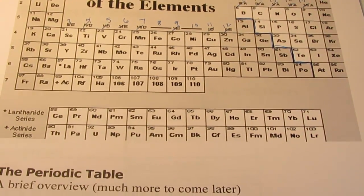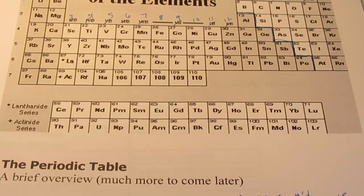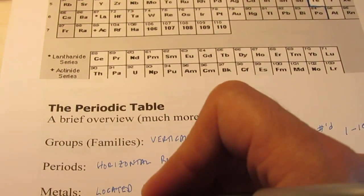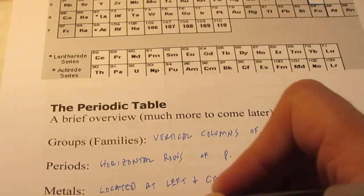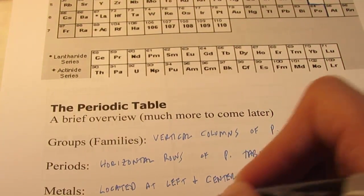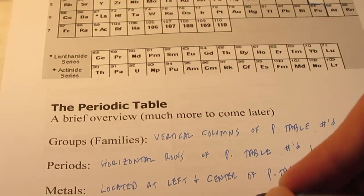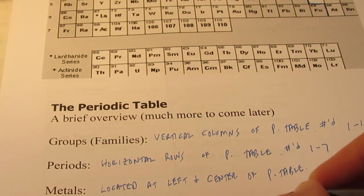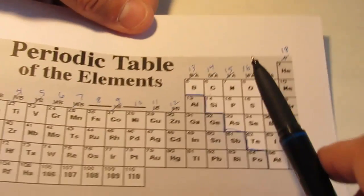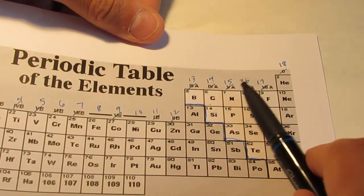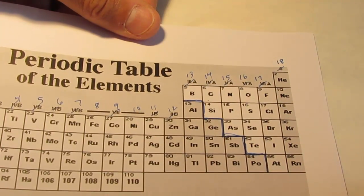Non-metals are located on the right side of the periodic table. Here's our little staircase, and these elements here to the right are considered to be non-metals.